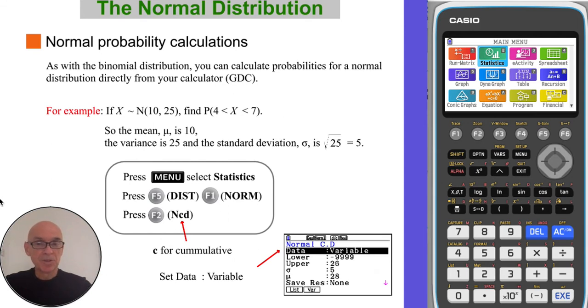As with the binomial distribution, in the normal distribution you're also expected to calculate probabilities directly from your calculator. So in this example, we're told that x follows a normal distribution with parameters 10 and 25.